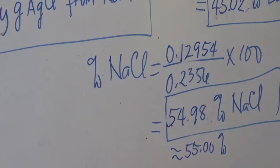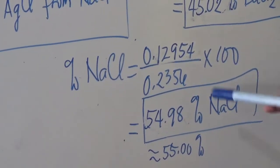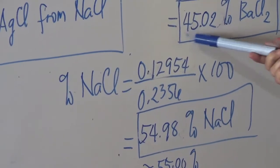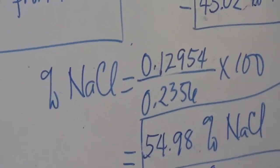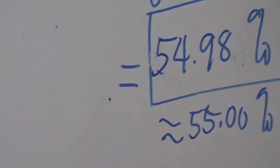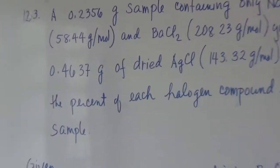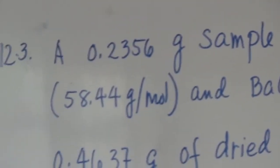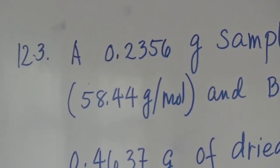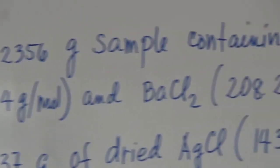As a check, you can subtract 100 minus 45% to arrive at the same value for sodium chloride. So this is Problem 12.3, where the sample is a mixture of different compounds. That's all for Problem 12.3.